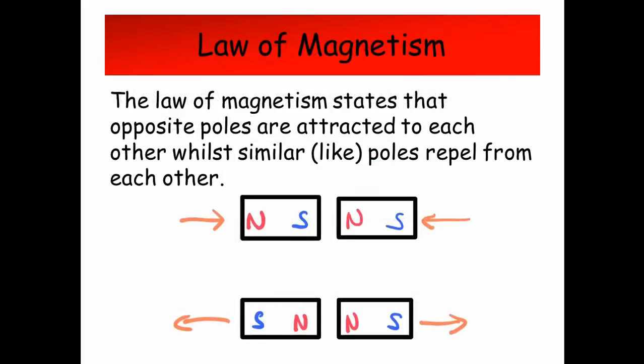Law of magnetism. The law of magnetism states that opposite poles are attracted to each other, while similar poles repel from each other.